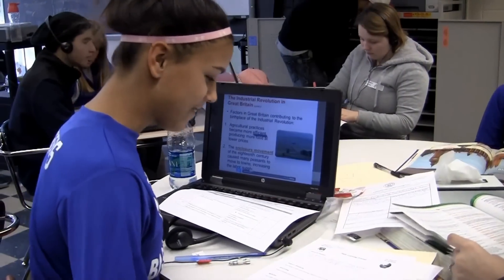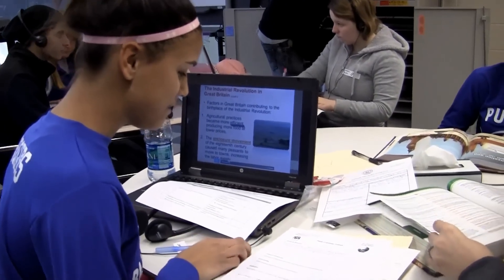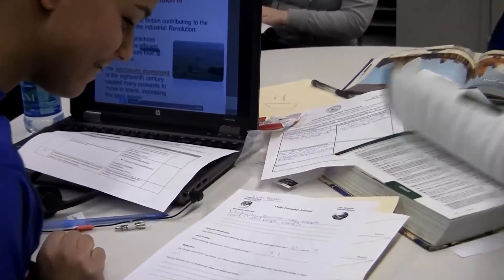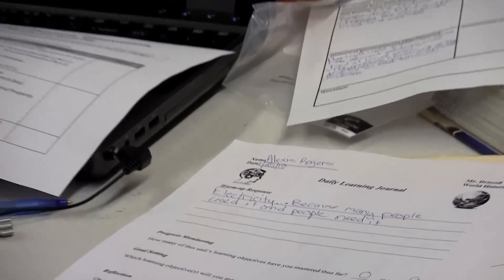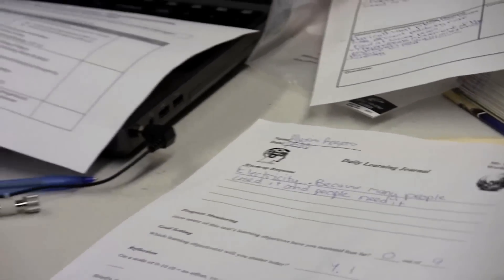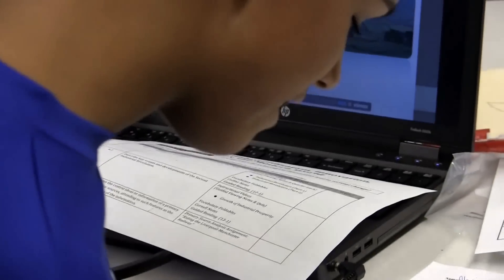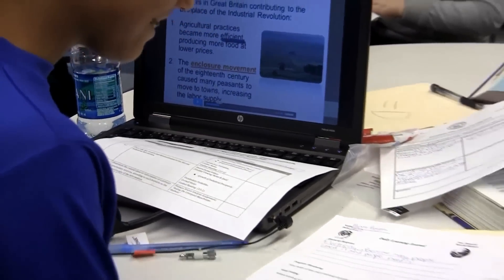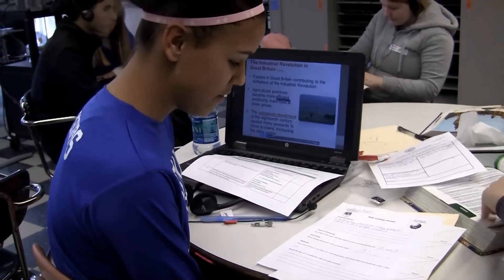So I come into Mr. Driscoll's class and I do the warm-up that is on the smart board. Then I do the progress monitoring, which would be like 2 out of 12 — how much I've done. Then I write down which learning objective I'll master today, which is 4.1.